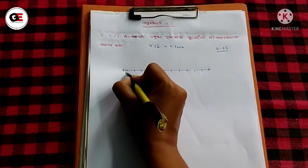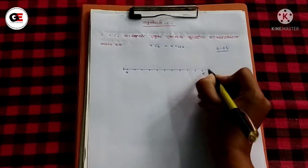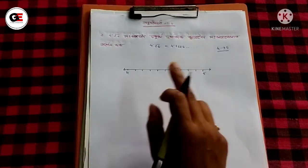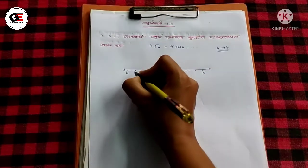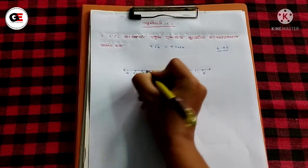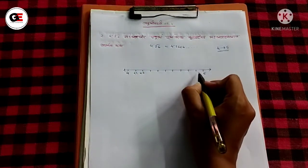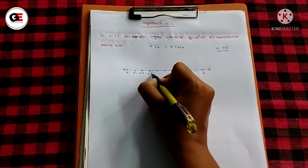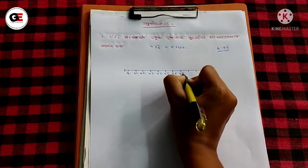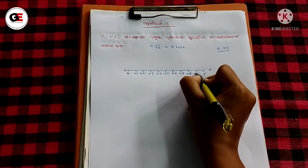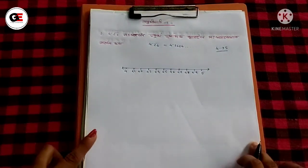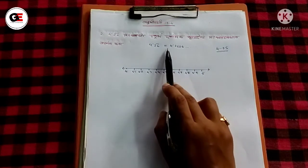We start by marking 4 and 4.5 on the number line, then 4.1 and 4.2, up to 4.9.